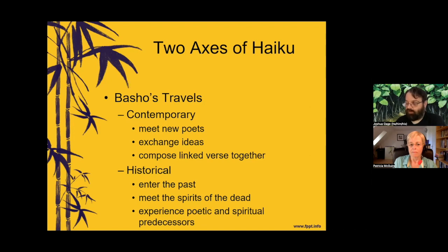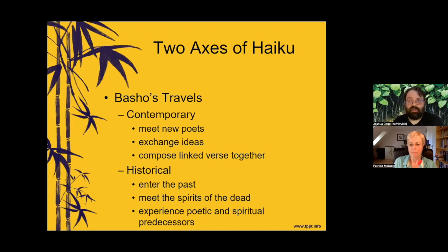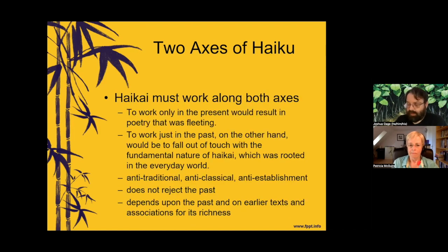An example of this is Basho's haibun. His haibun were contemporary in that he meets new poets, exchanges ideas, and composes linked verse together with them — but they were also part of the historical past. Shirane argues that the classic Oku no Hosomichi is contemporary in that Basho is traveling and writing with Sora, but it's also a trip to see famous places connected with famous poets like Saigyo. So he is tapping into the past while engaging with the contemporary and modern, and this creates the two axes Shirane is discussing.